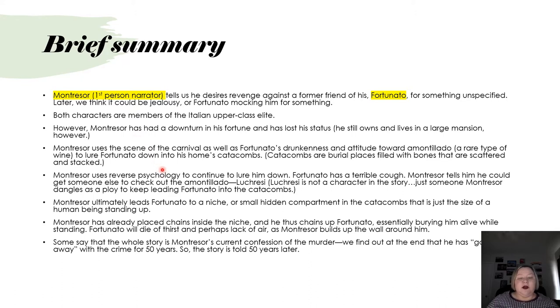Montresor uses the scene of the carnival, as well as Fortunato's drunkenness and attitude toward Amontillado, to lure Fortunato down into his home's catacombs. Amontillado is a rare type of wine, and a cask is a barrel. The very first slide here has an example of what a cask of wine would look like. Catacombs are burial places, generally underground in someone's home or under a church, filled with bones that are scattered and stacked in unusual configurations.